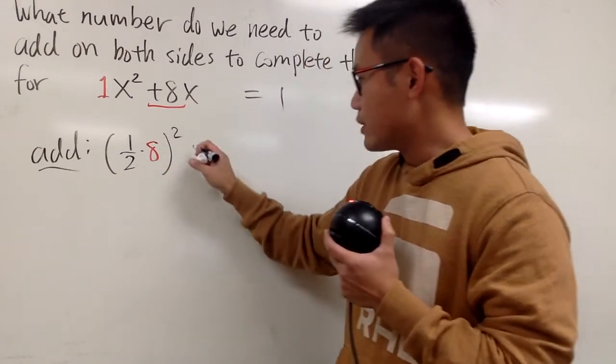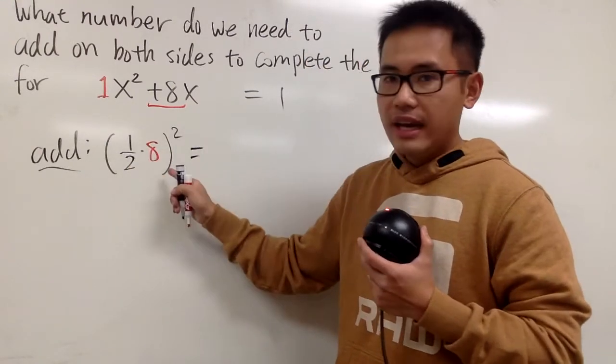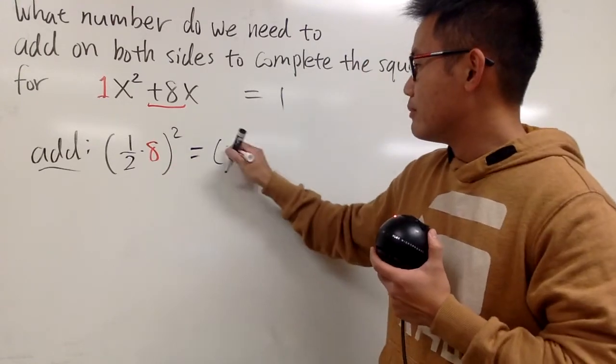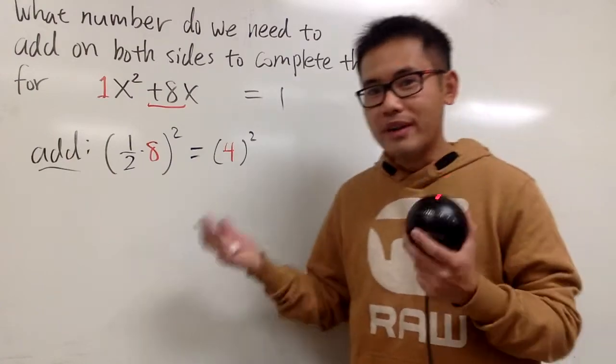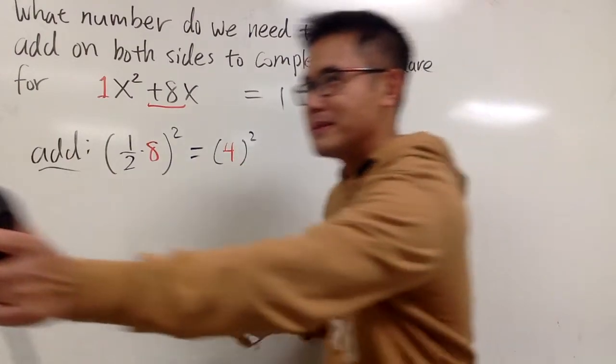And we can just work this out. 1 half of 8 is 4. And we'll just write this inside, and then square that. And what's 4 squared? 16.